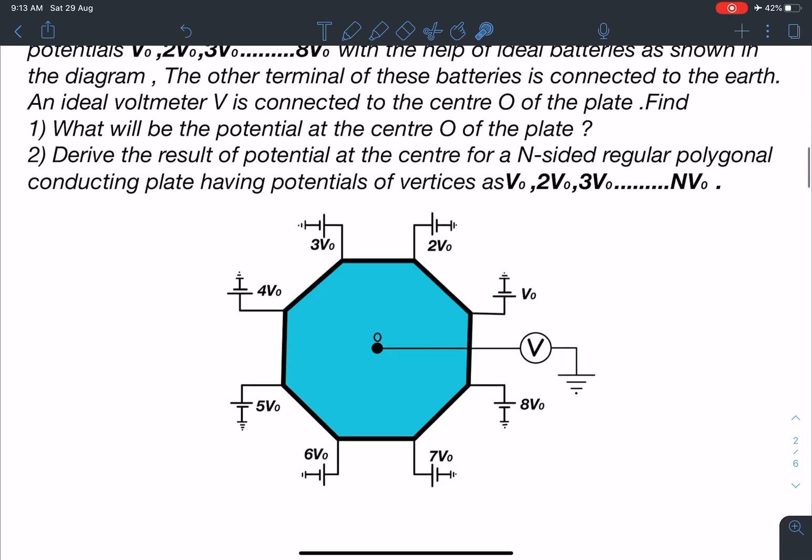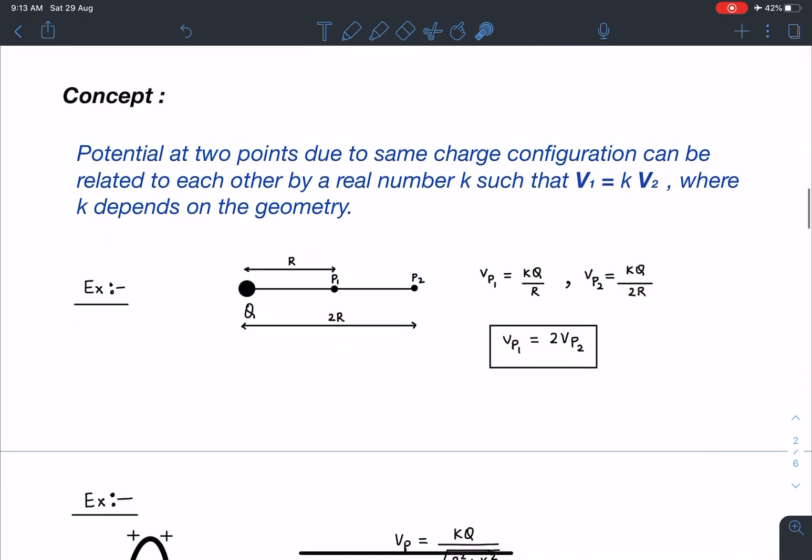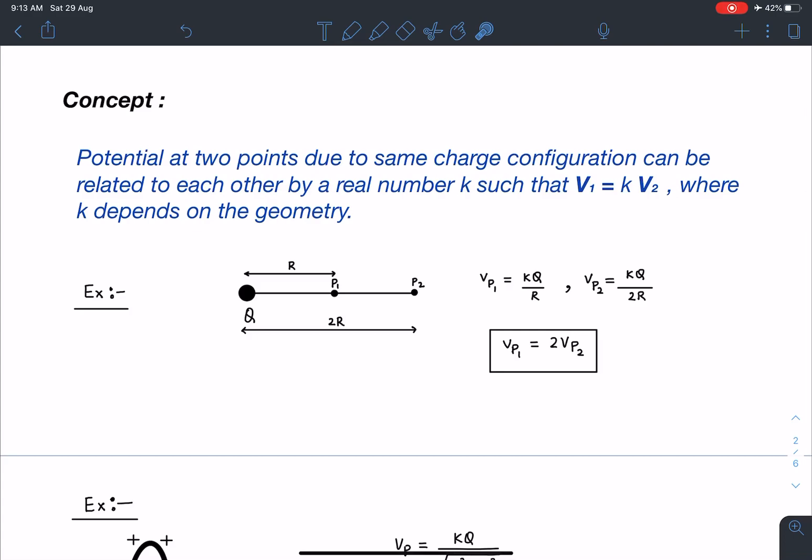So let's discuss the concept of this problem. Potential at two points due to the same charge configuration can be related to each other by a real number K such that V1 equals KV2, where K depends on the geometry. So let's try to understand this concept part here.